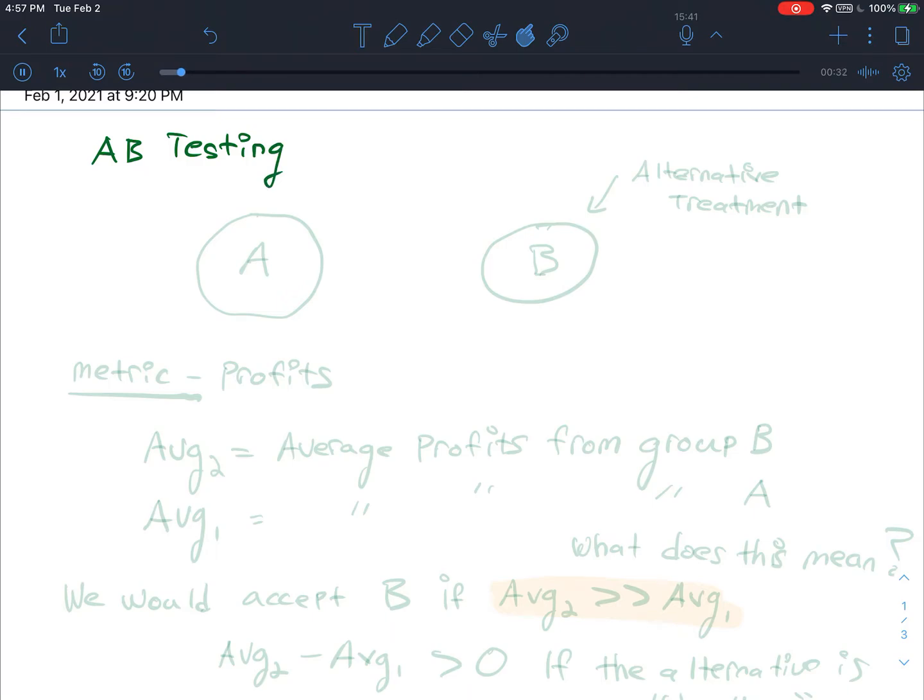In A/B testing we usually have two groups. We have a group A and we have group B. Let's say group B gets some alternative treatment. And remember, as we discussed in class, these are randomly assigned.